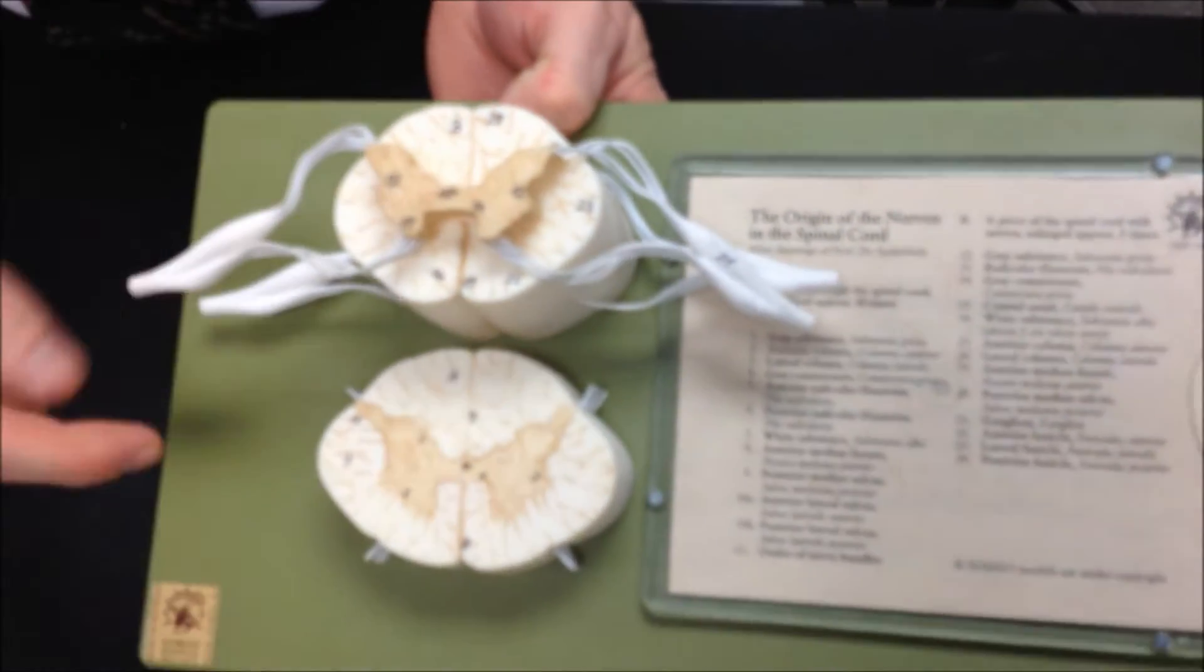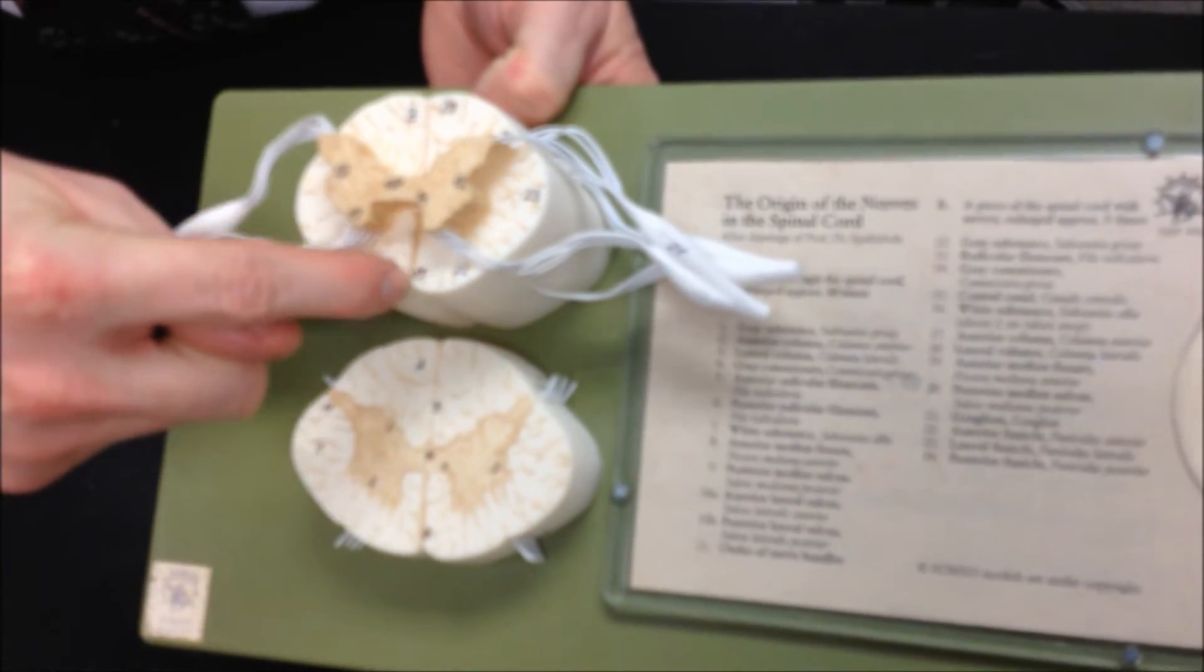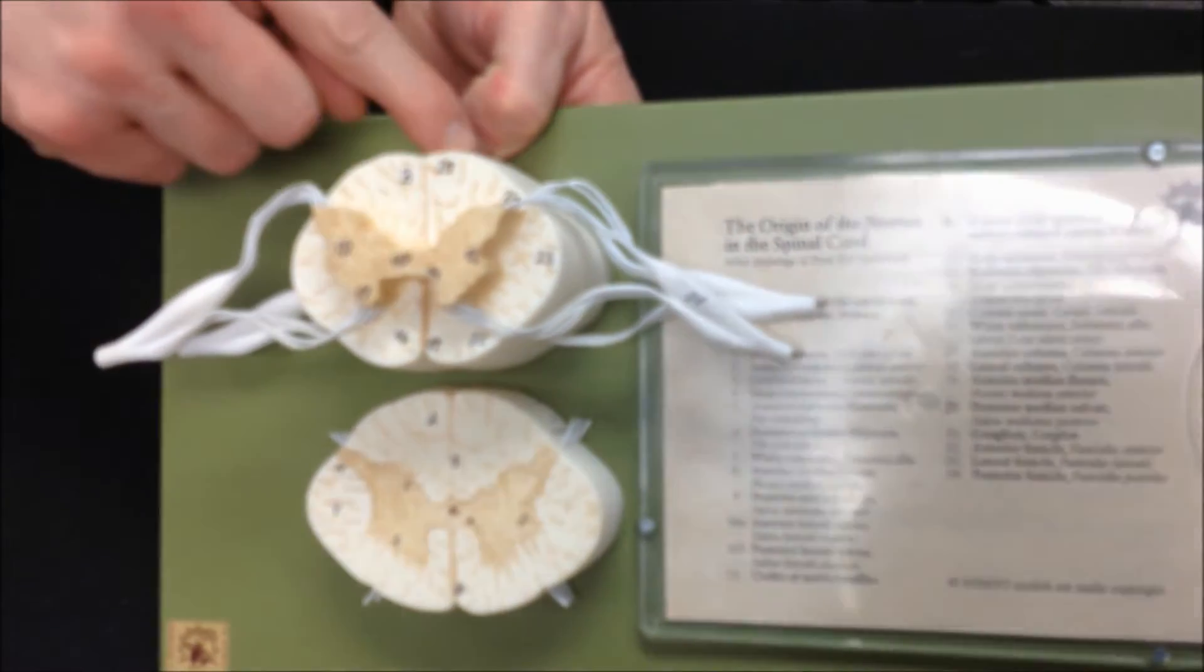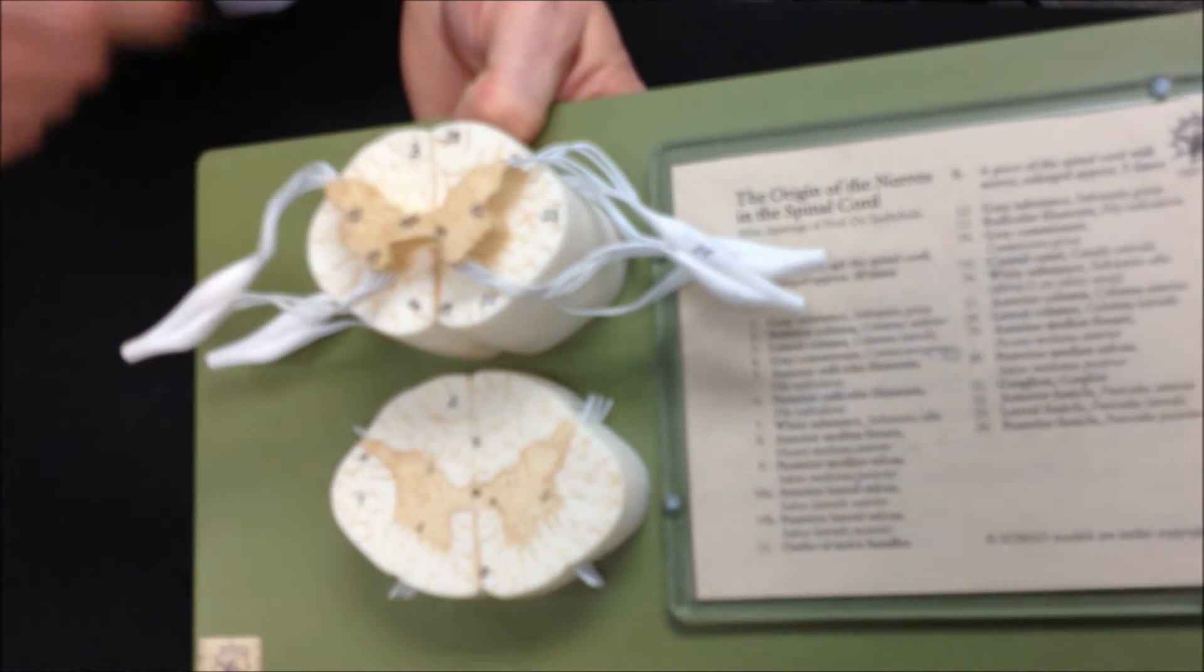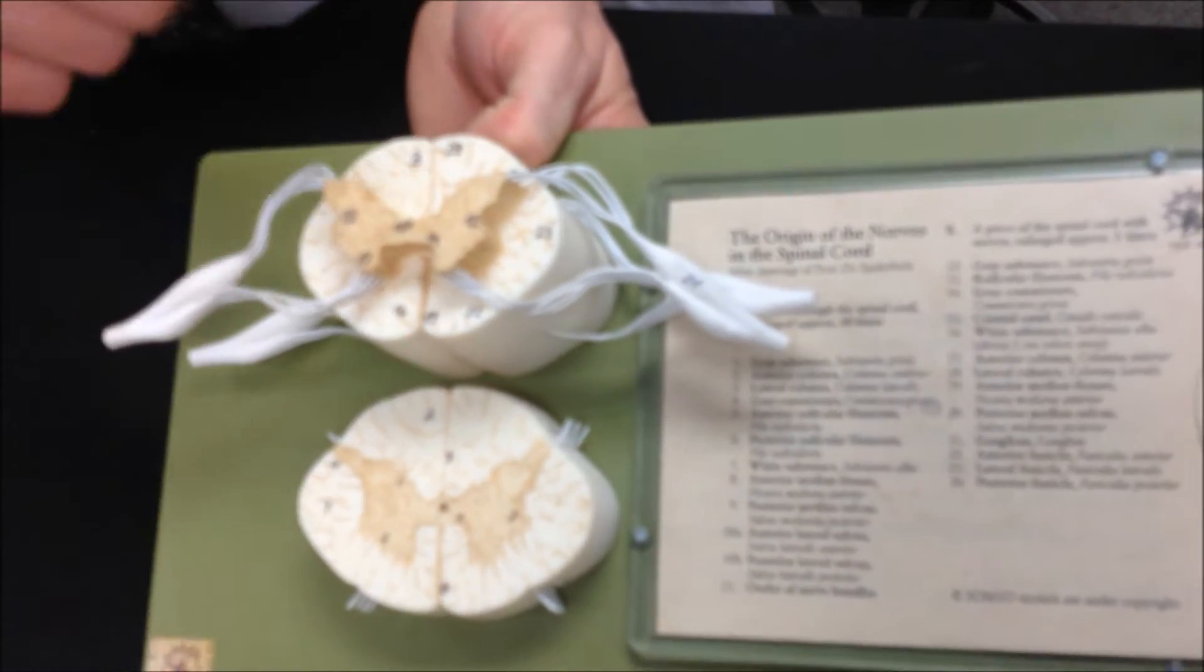All right. So the spinal cord model. Start up front, the anterior median fissure, the big line there. In the back, the posterior median sulcus. All of the white matter around here will be your funiculi, or funiculus for singular.